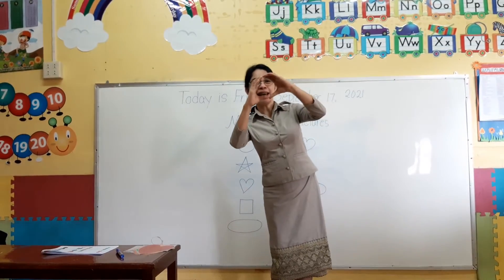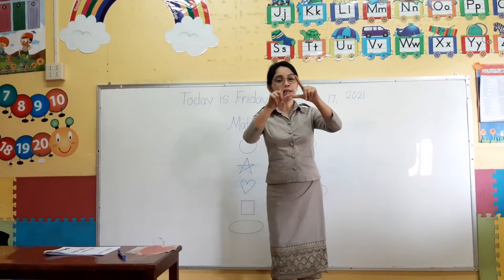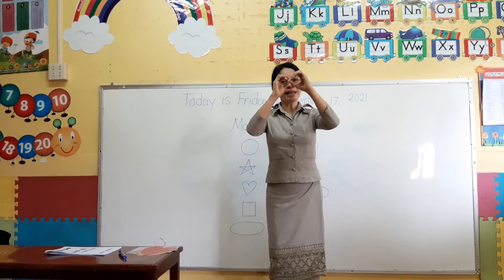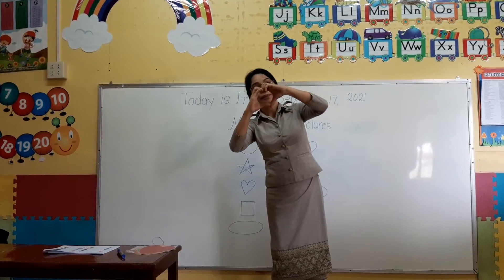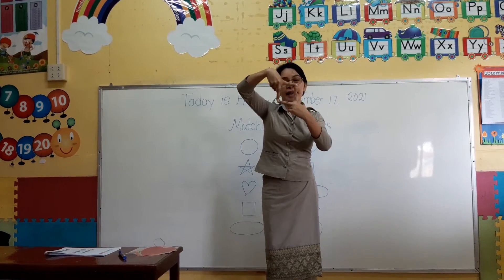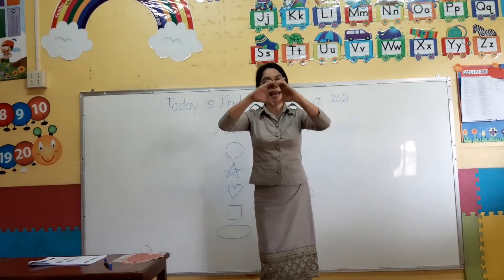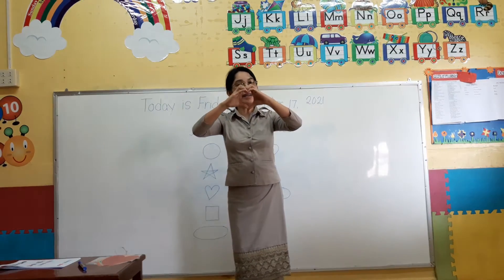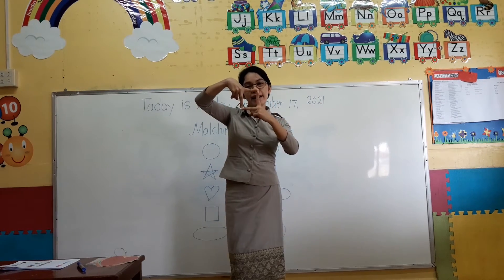Can you see a circle? Yes, I can. Can you see a circle? Yes, I can. Can you see a triangle? Yes, I can. Can you see a triangle? Yes, I can. Can you see a square? Yes, I can. Can you see a heart? Yes, I can. A circle, a triangle, a square, a heart.